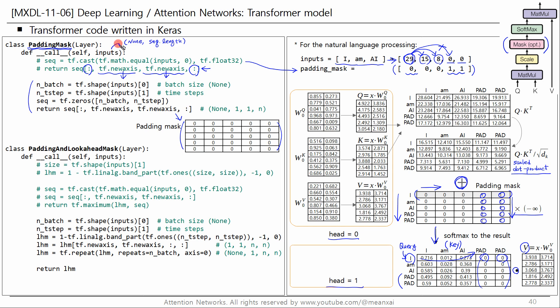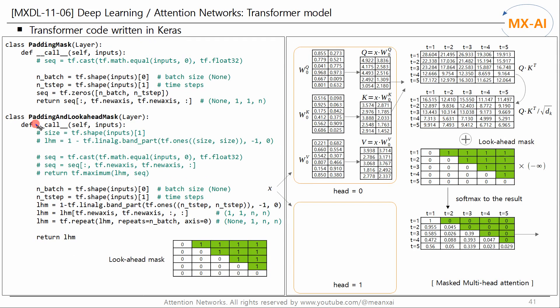In natural language processing, inputs are two-dimensional — a none by the sequence length matrix. But our inputs for the time series are three-dimensional: none, the sequence length, d model. Next, we will modify the padding and lookahead mask class. In the absence of padding, the lookahead mask used for masked multi-head attention in the decoder can be simply generated as follows. We'll look at the case with padding later in the natural language processing tutorial. Lookahead mask is also four-dimensional: the second dimension is the number of heads, and the third and fourth are the sequence lengths.